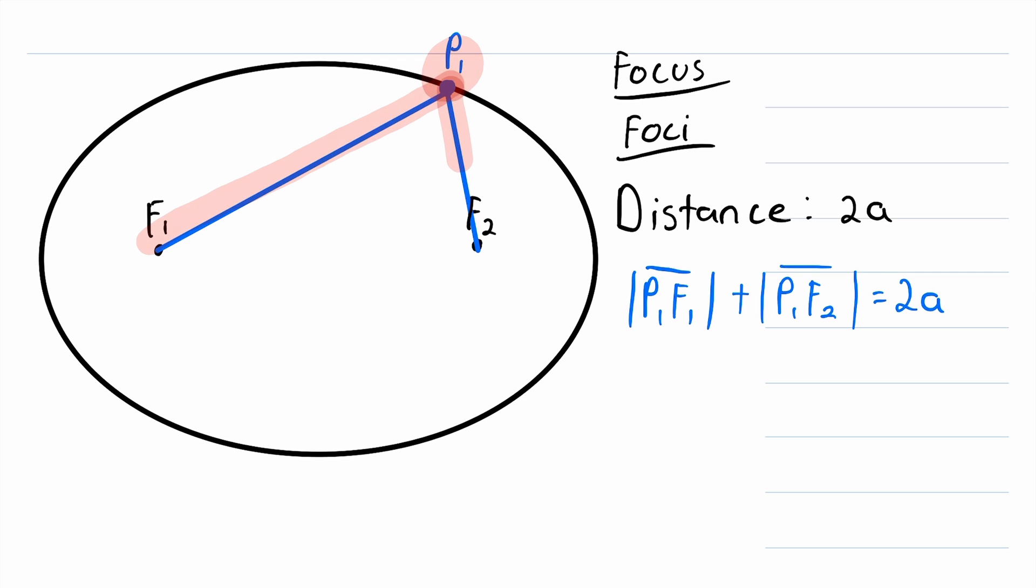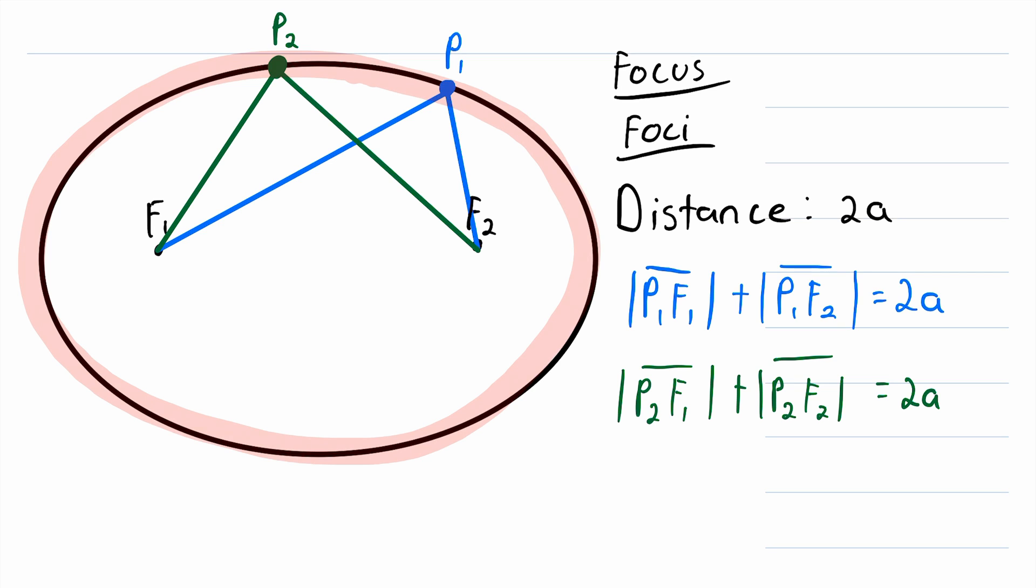So given two foci and a distance, an ellipse is the set of all points such that for each point, the sum of its distances from each foci is equal to that original given distance. It's kind of similar to what a circle is. You might remember that a circle is a set of all points that have the same distance from a center. In an ellipse, the distance from any point to either of the two foci is not always the same. But if you add up those two distances from each foci, that sum will always be the same. So if this green point that I just drew is p2, then we could write that the length of the line segment p2 f1 plus the length of the line segment p2 f2 is of course equal to 2a. So pick any point you want on an ellipse. If you add up the distances from that point to the two foci of the ellipse, you'll always get the same number.